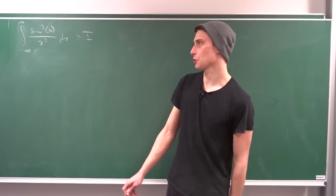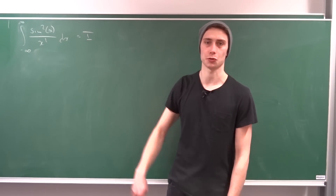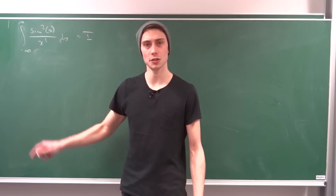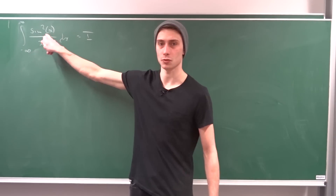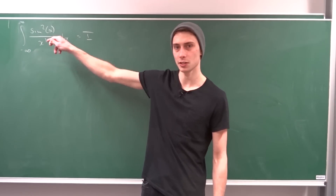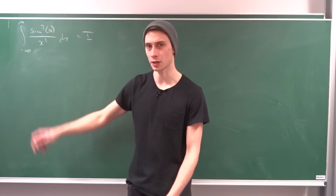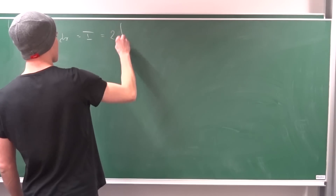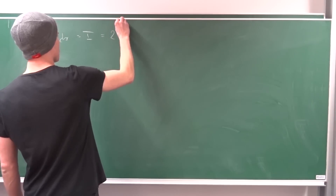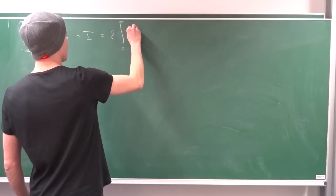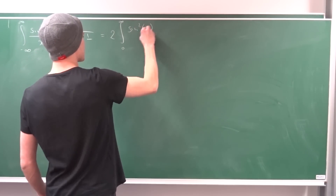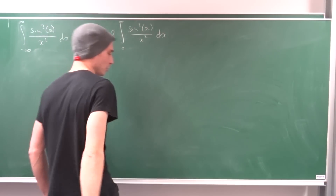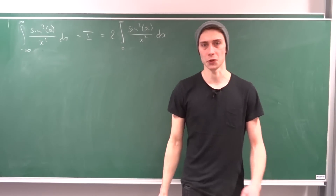So here's our first observation. I call this integral I. And also, this is an even integral, so if we plug in minus x, that gives us the original integral. So we can rewrite this as two times the integral from zero to infinity of sine squared of x over x squared dx. So that's nice and fine, but what can we do with that?